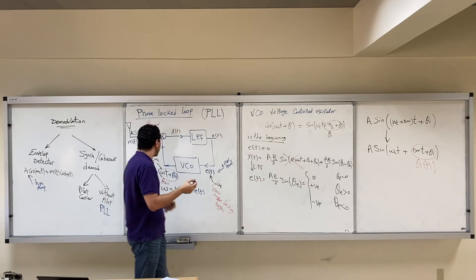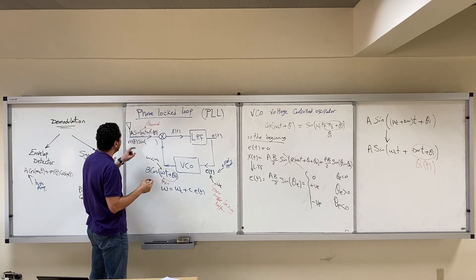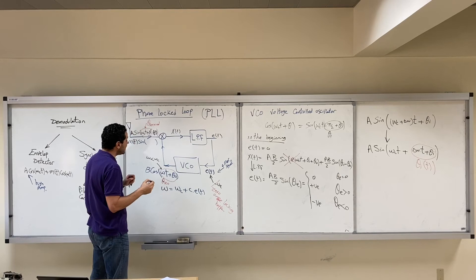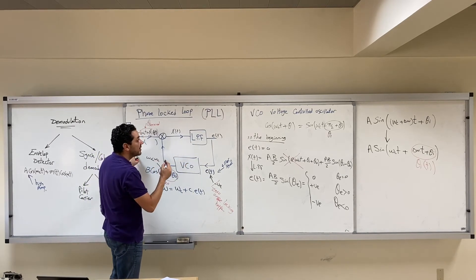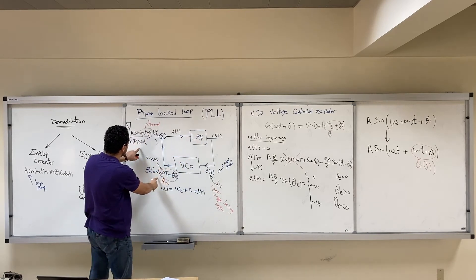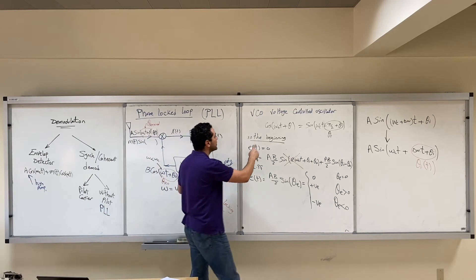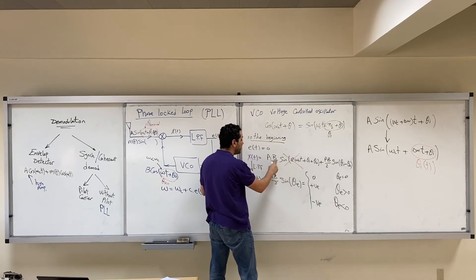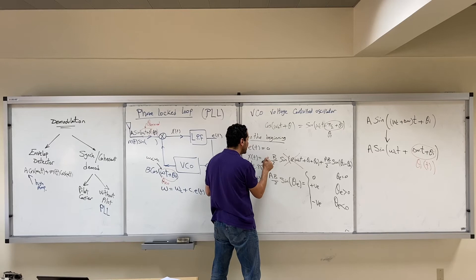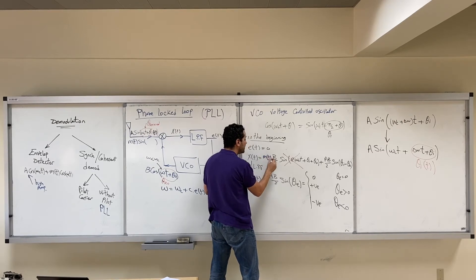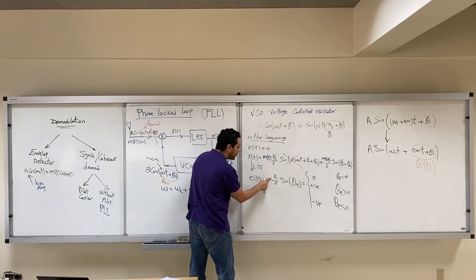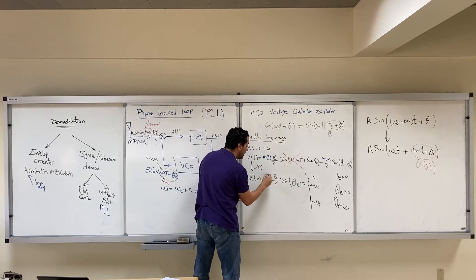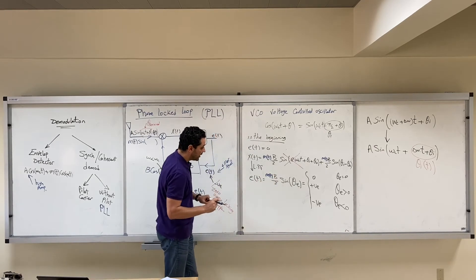When you receive M(t)·sin instead of A·sin, the error signal E(t), after multiplying and passing through the filter, will give X(t) which is not AB/2 but M(t)·B/2. After passing through the low-pass filter, what you get is M(t)·B/2.